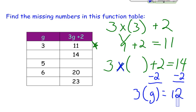g must then be 4, because 12 divided by 3 equals 4. And we can check our work. 3 times 4, that's 12, plus 2 equals 14. We did it right. How about the next one?